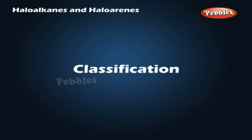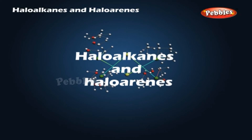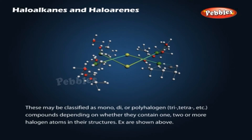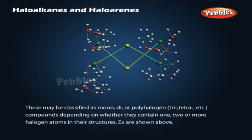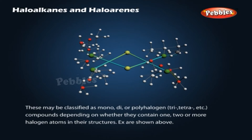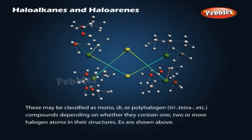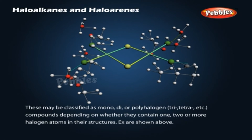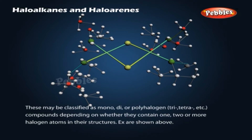Classification of haloalkanes and haloarenes: these may be classified as mono-, di-, or polyhalogen (tri-, tetra-, etc.) compounds, depending on whether they contain 1, 2, or more halogen atoms in their structures.